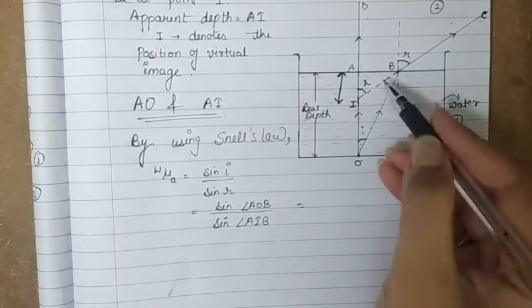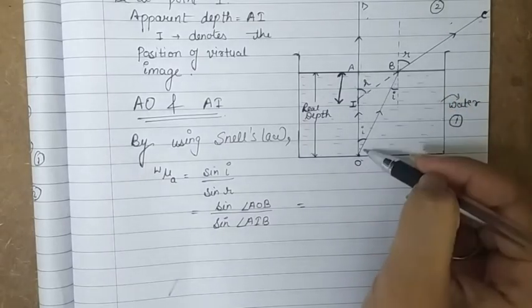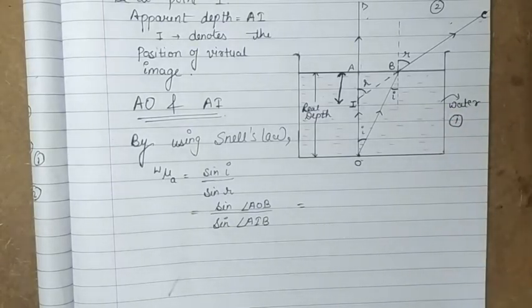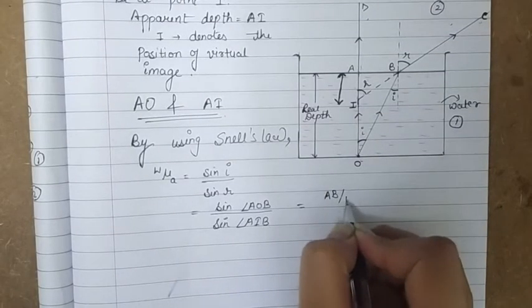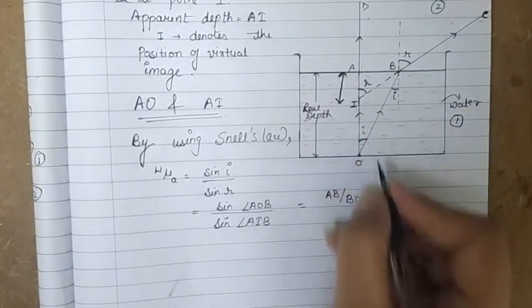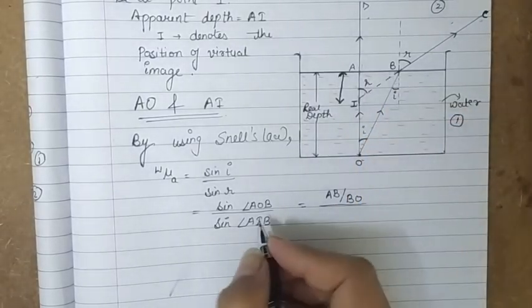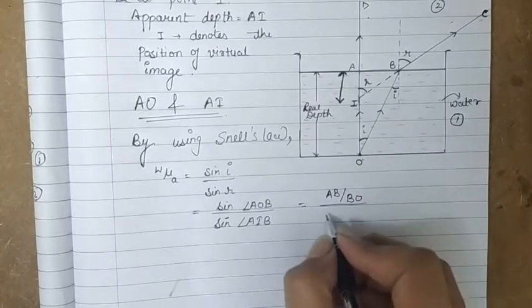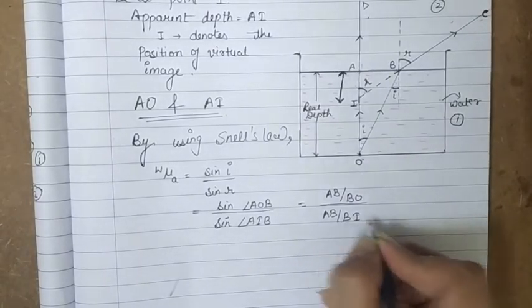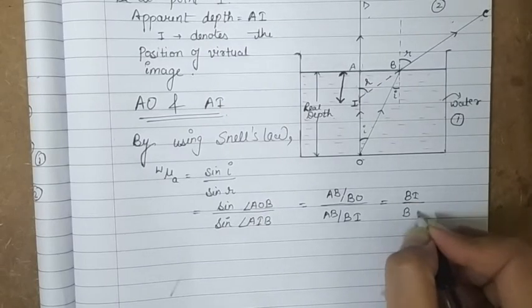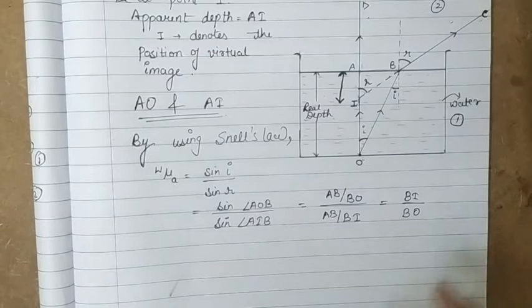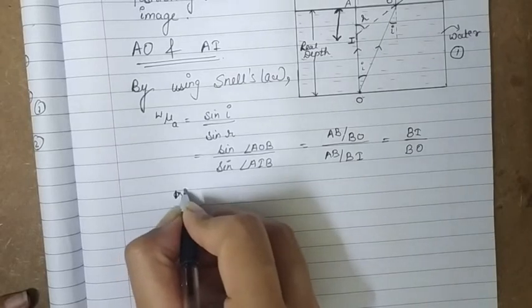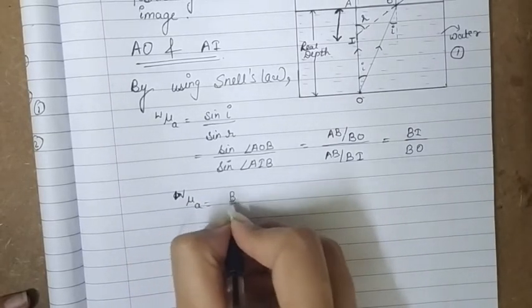Using simple trigonometry in triangle AOB, sine of angle I equals perpendicular over hypotenuse, which is AB over BO. Similarly, in triangle AIB, sine of angle AIB equals AB over BI. Substituting into Snell's law and cancelling AB from numerator and denominator, we get W-mu-A equals BI upon BO.